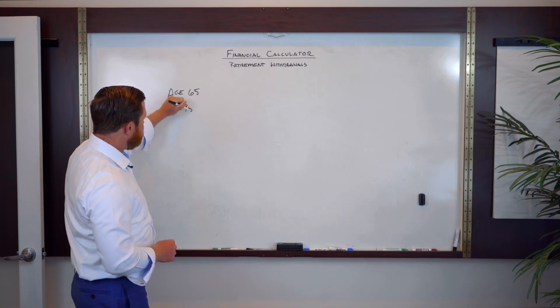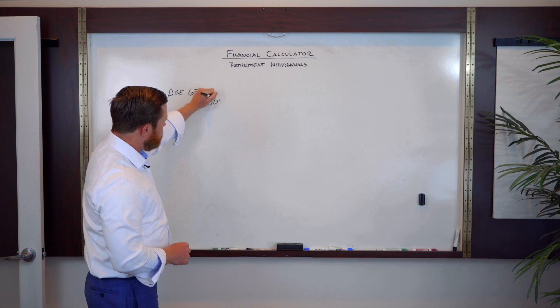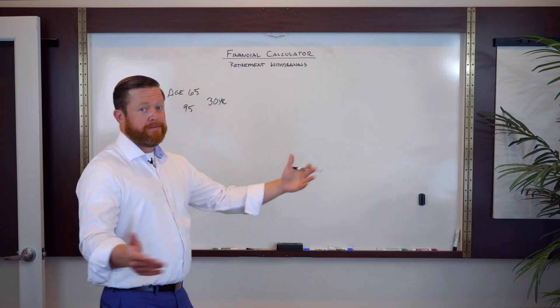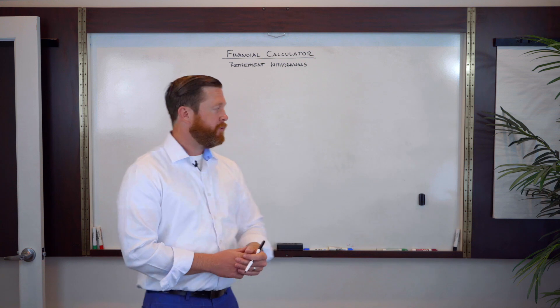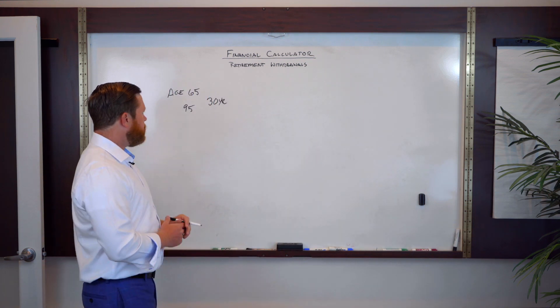We're going to go to age 95. So we've got a 30 year timing horizon, planning horizon, however you want to look at it. So 30 years is what we're looking at.